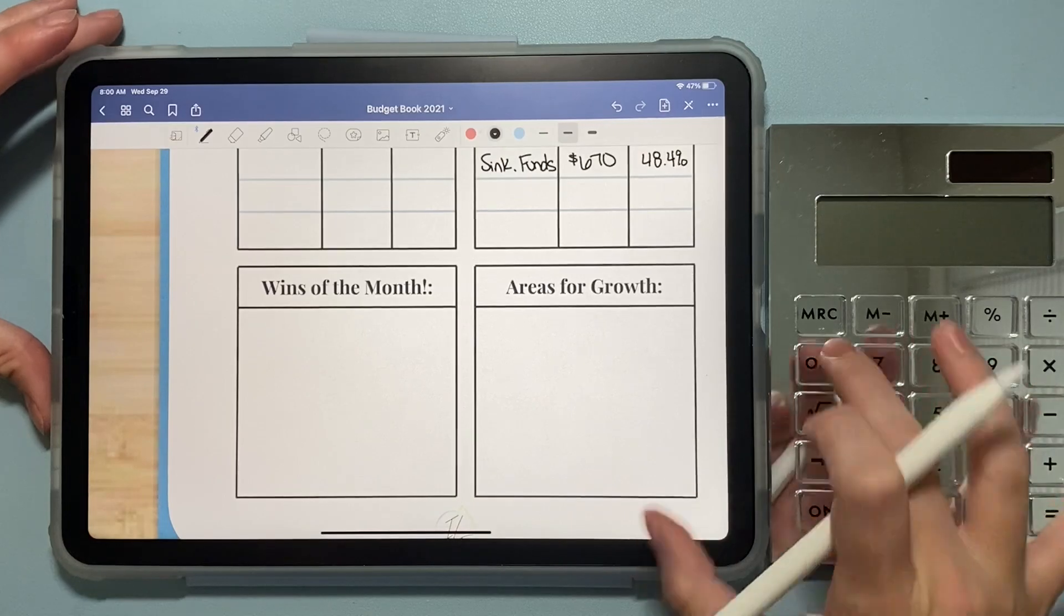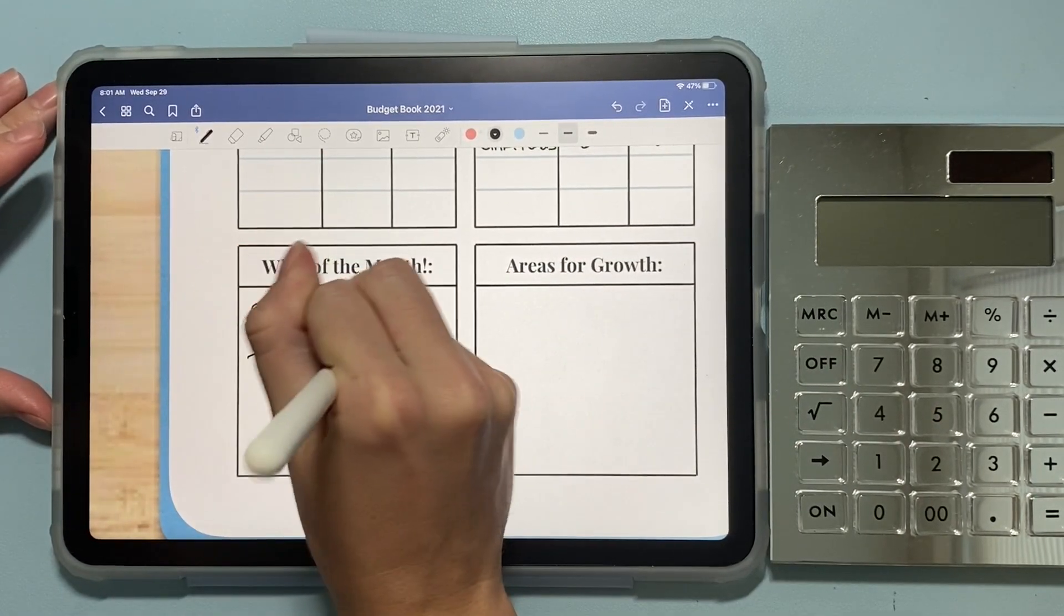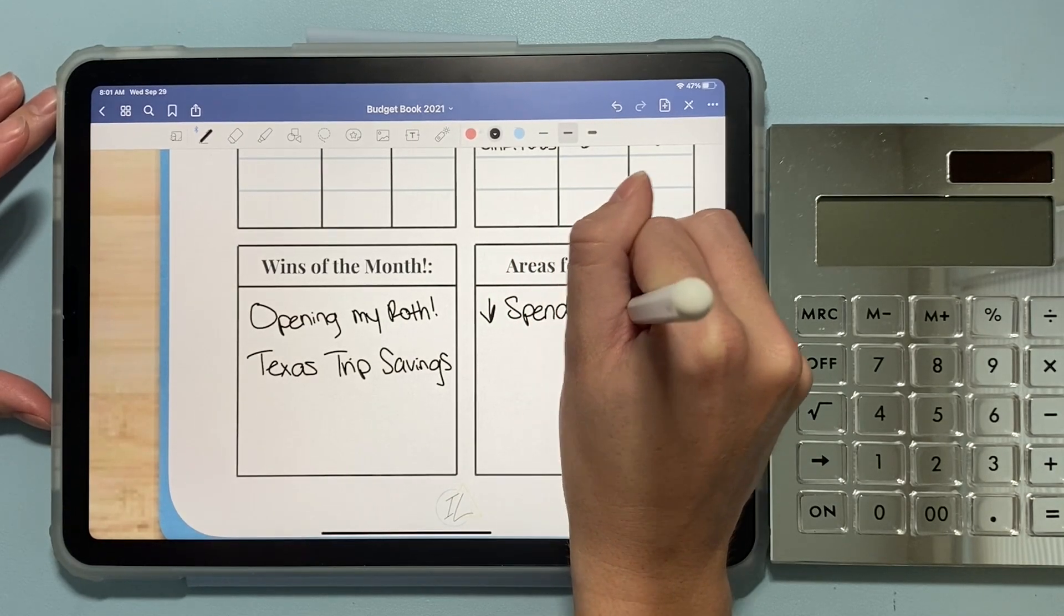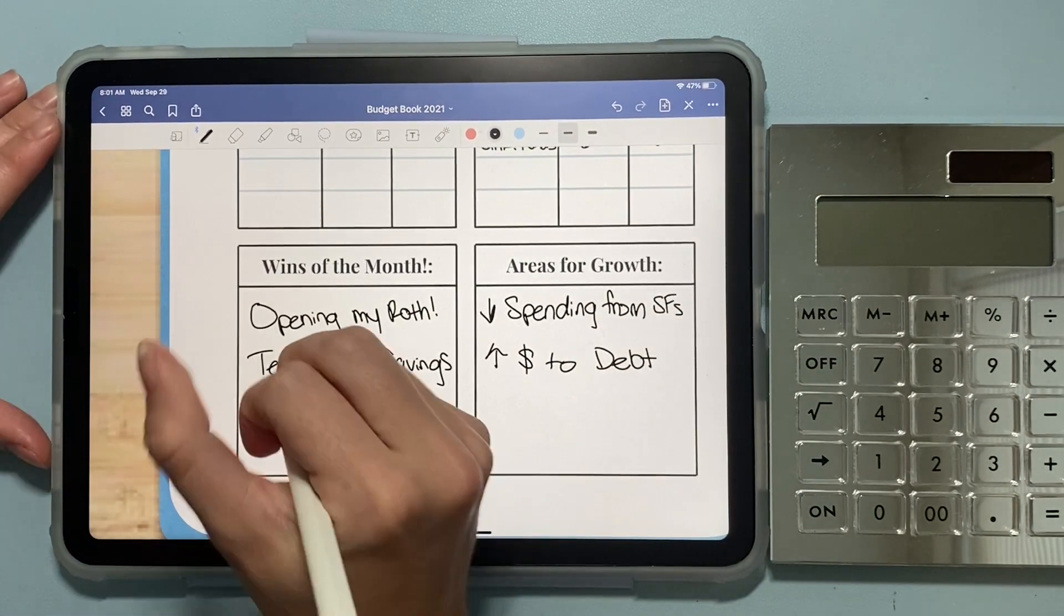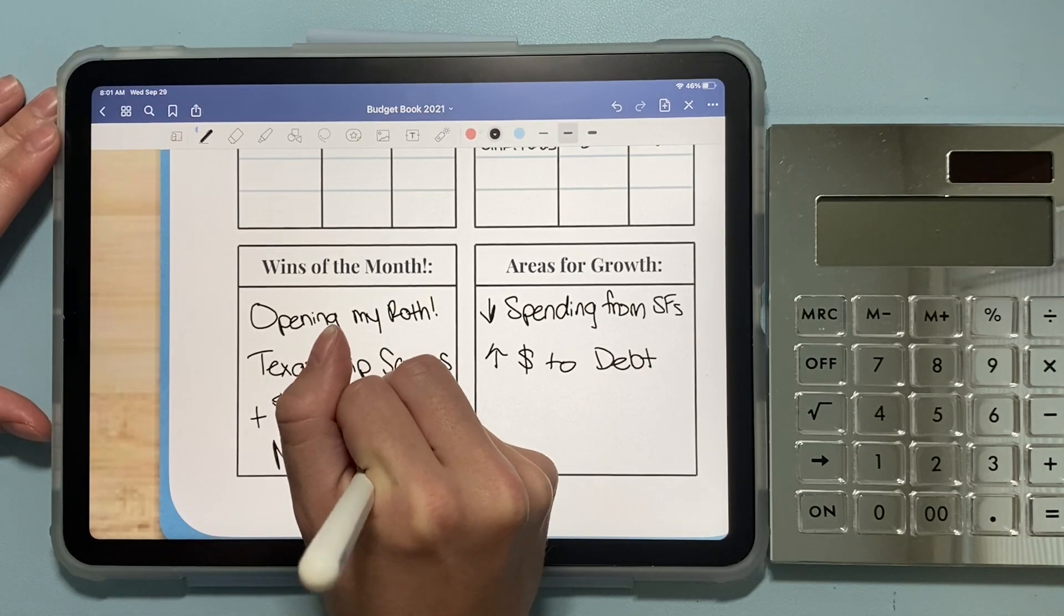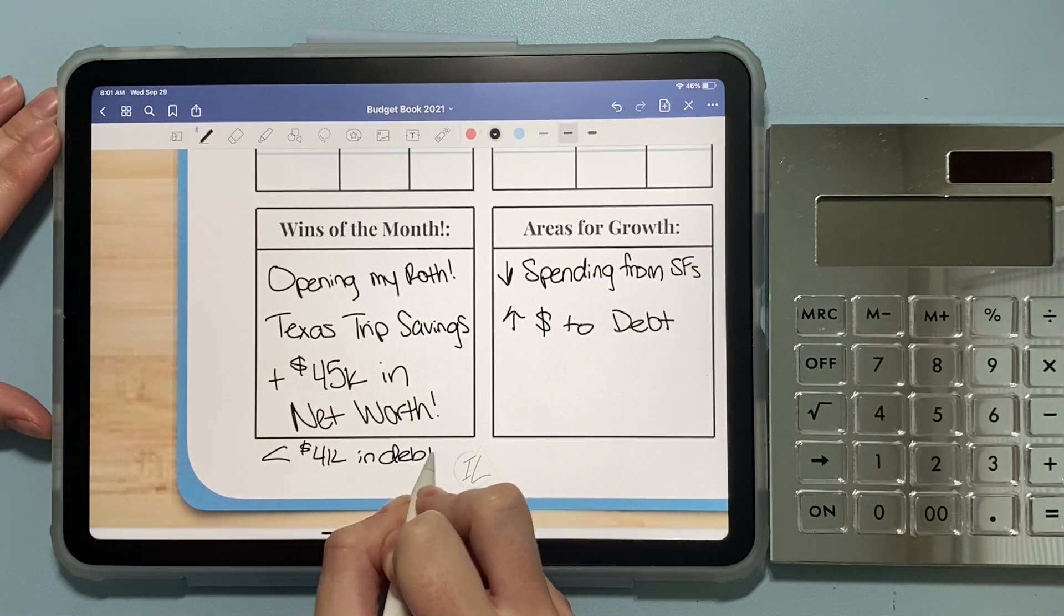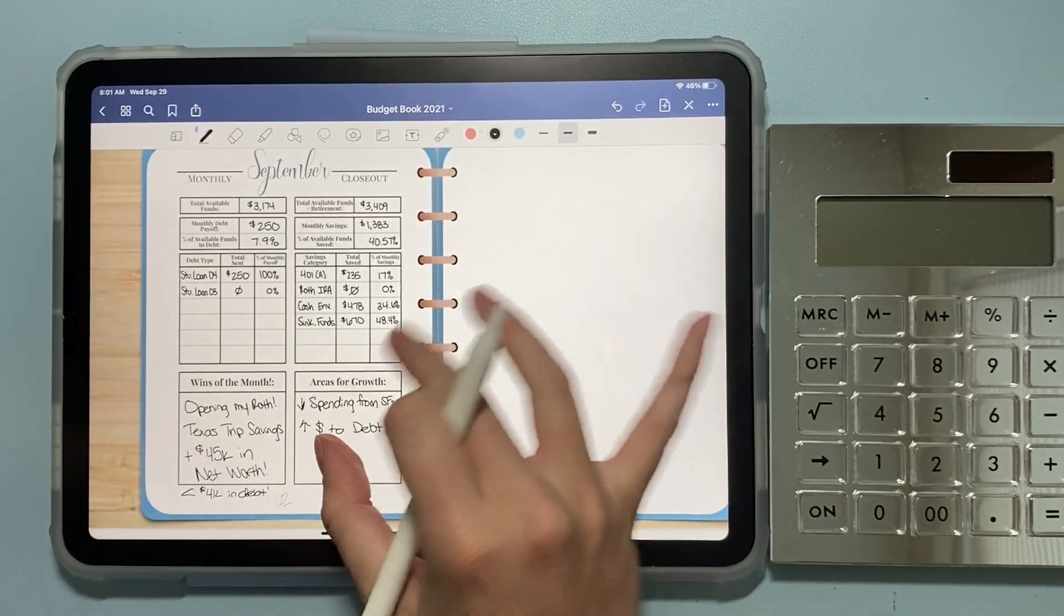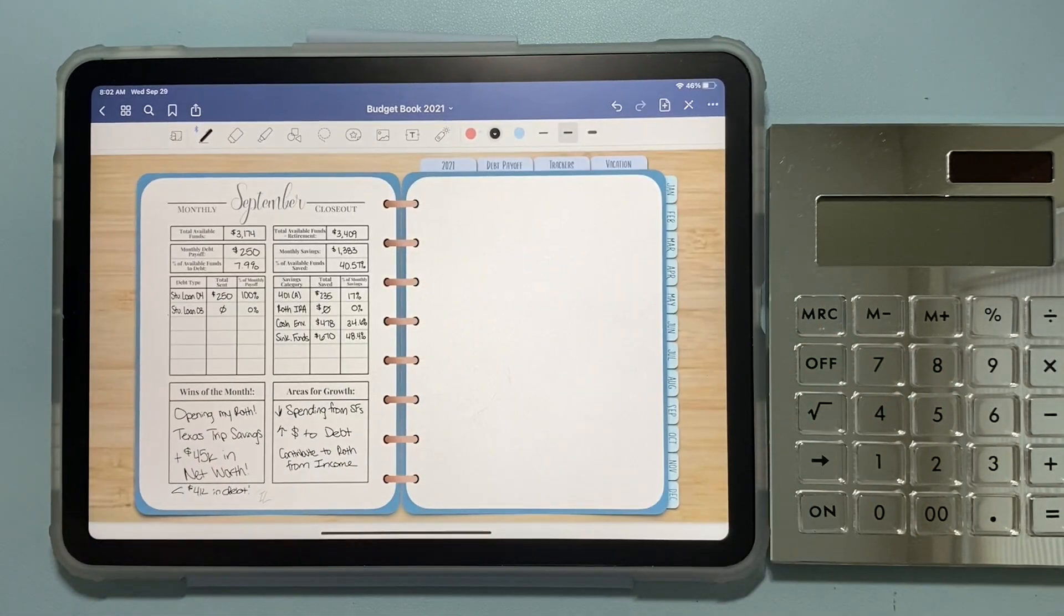So reflecting on the month, some wins were opening a Roth IRA. I guess like my Texas trip savings went well. But some areas for growth are decrease spending from my sinking funds. I'm going to say increase money towards debt. Another win is being over 45K in net worth. That's a huge win. And then less than 4K in debt. That's also a win. And then another area for growth, I think, I'll just say contribute to Roth IRA. My handwriting is trash today. So sorry about that.